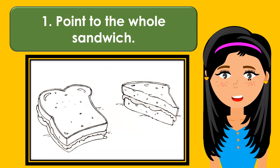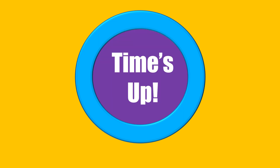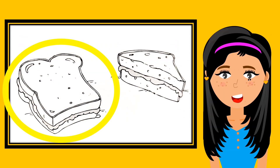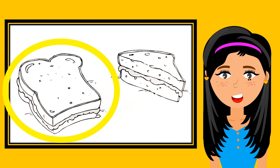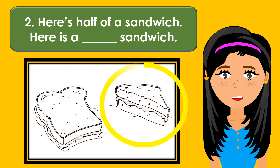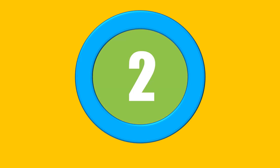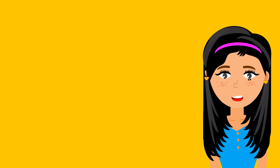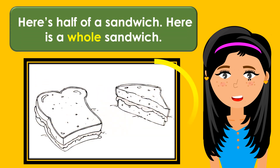Point to the whole sandwich. Here's half of a sandwich. Here is a blank sandwich. The missing word is whole. Here's half of a sandwich. Here is a whole sandwich.